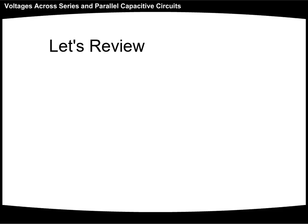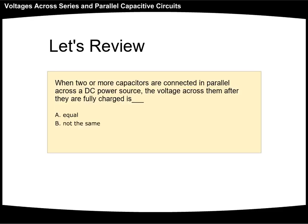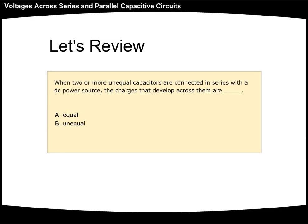Let's review. When two or more capacitors are connected in parallel across a DC power source, the voltage across them after they are fully charged is: A, equal, or B, not the same. The answer is A, equal. When two or more unequal capacitors are connected in series with a DC power source, the charges that develop across them are: A, equal, or B, unequal. The answer is B, unequal.